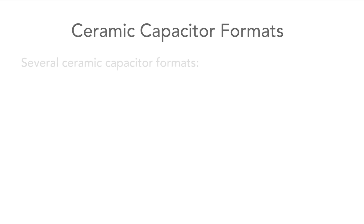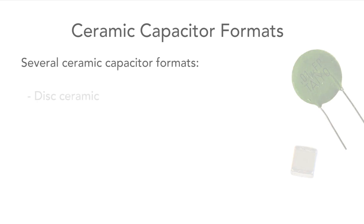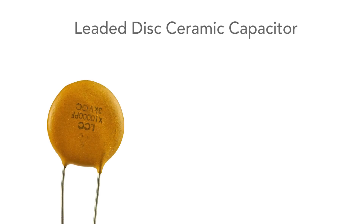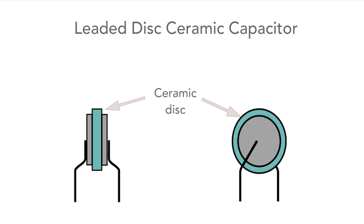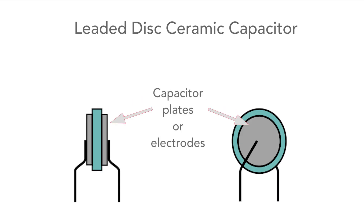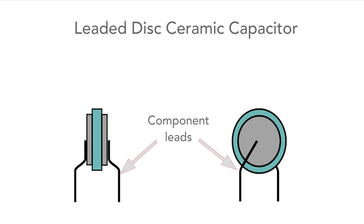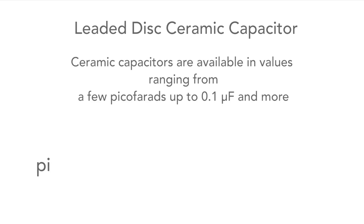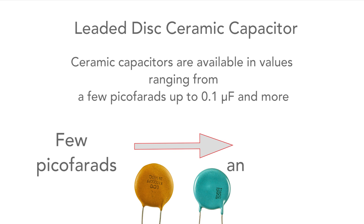We're now going to look at the various formats for these capacitors. Although there are several formats, the two main types by far are the leaded disc ceramic and the multi-layer ceramic capacitor, or MLCC. The disc ceramic capacitor is based around a disc of ceramic with capacitor plates on either side. Leads are bonded on and the overall capacitor is coated to protect it mechanically and from moisture and other contaminants.